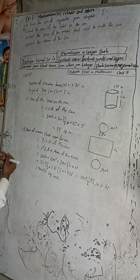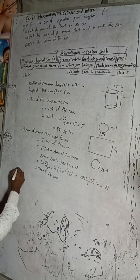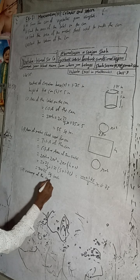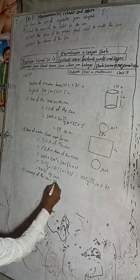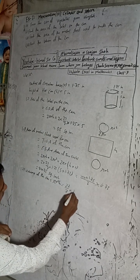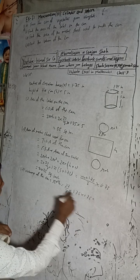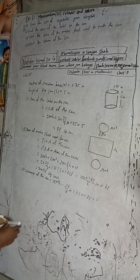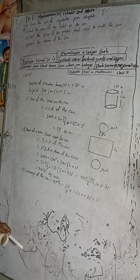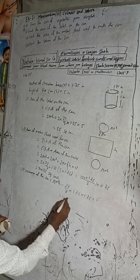Now we need the volume of the can. Volume equals the area of the circular cross-section times the height, that is pi r squared times height. So: (22/7) × 1.75 × 1.75 × 5. Calculating: 22 × 1.75 × 1.75 × 5 ÷ 7 = 48.125. The volume of the can is 48.125 cubic inches.